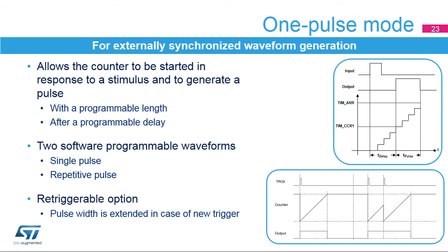One-pulse mode generates a pulse of programmable length in response to an external event. The pulse can start as soon as the input trigger arrives or after a programmable delay. The Compare 1 register (CCR1) defines the pulse start time, while the Auto Reload register (ARR) defines the end of the pulse. The effective pulse width is the difference between ARR and CCR1. The waveform can be programmed for a single pulse or a continuous pulse train. One-pulse mode also offers a retriggerable option: a new trigger arriving before the end of the pulse resets the counter and extends the pulse width accordingly.